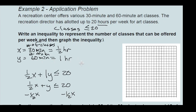Moving one-half x to the other side gives us y is less than or equal to negative one-half x plus 20. That's our slope-intercept form for this application problem. Now we're ready to graph it.